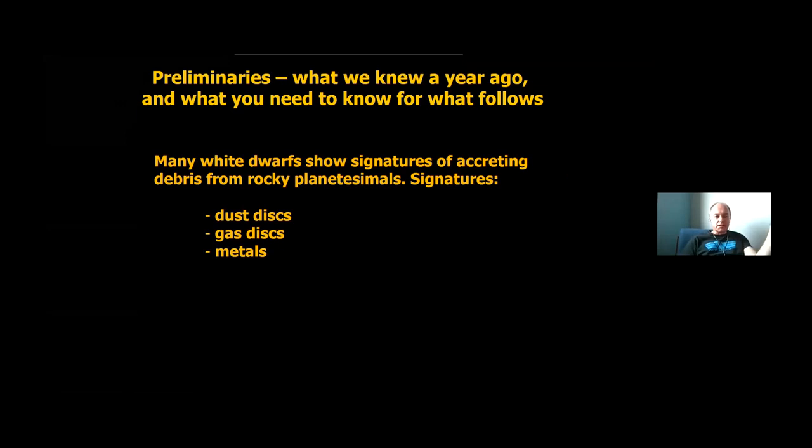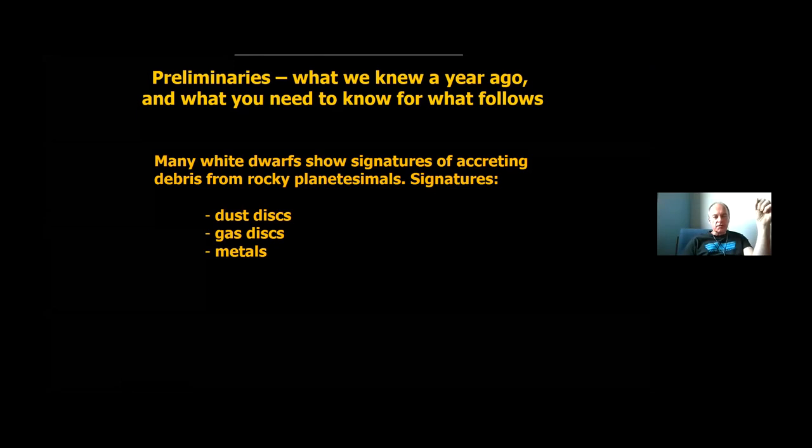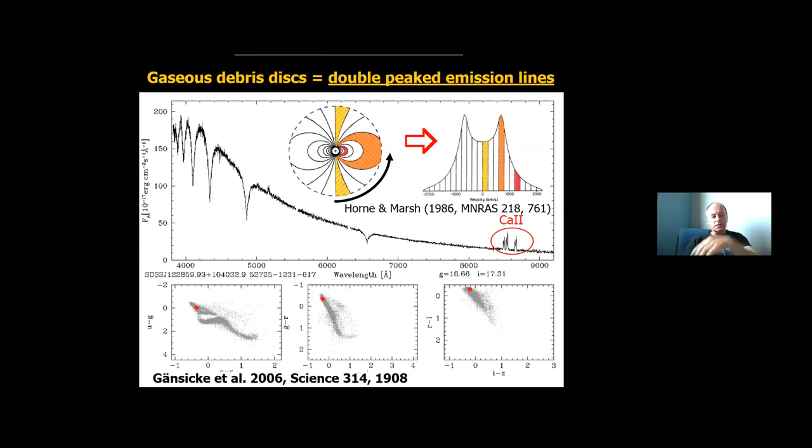Basically, the very brief summary is that many white dwarfs, maybe all of them, still have remnants of planetary systems. And a lot of them show signatures of these planets because they have dusty disks, gas disks, and metals in the photosphere. And I thought to focus on the gas disks because that is part of the topic that comes up.